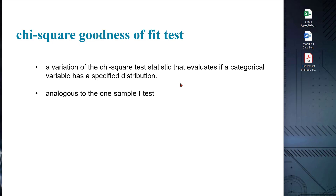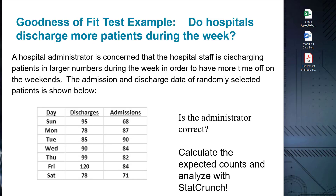Using an example of hospital admission and discharge data, we can see how the goodness of fit test works as a non-parametric test. It allows us to assess whether the observed frequencies or counts significantly deviate from what is expected under a given distribution. We have counts that we compare to a known proportion or an all-equal distribution.